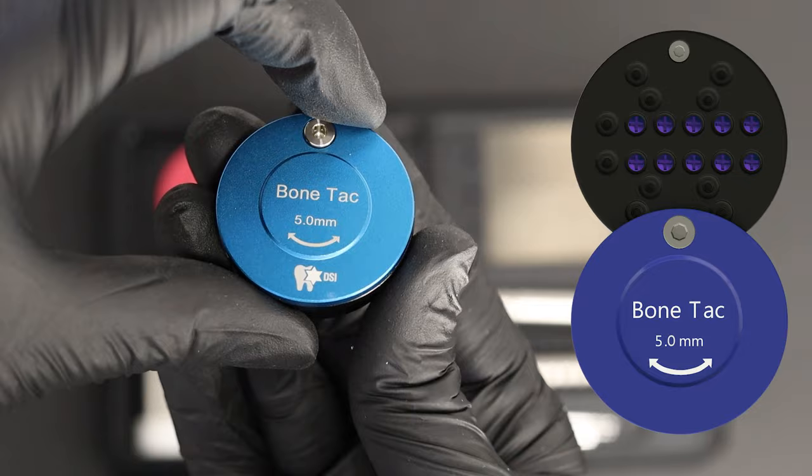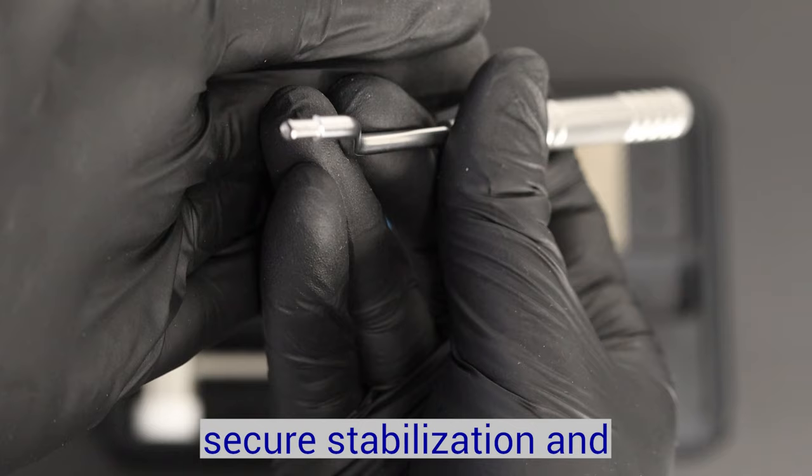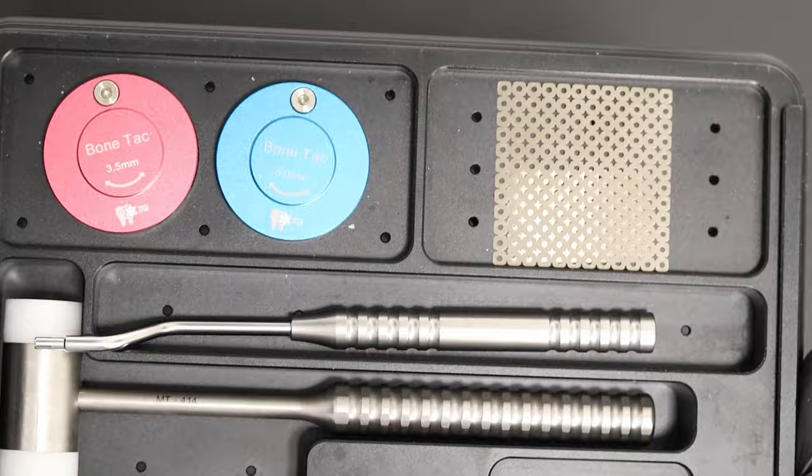It has the differential thread, providing greater extra stability and support throughout the healing process. The tags are coming in 3.5 and 5 mm lengths, color-coded for easy identification.